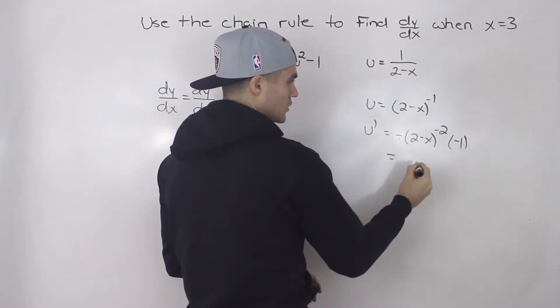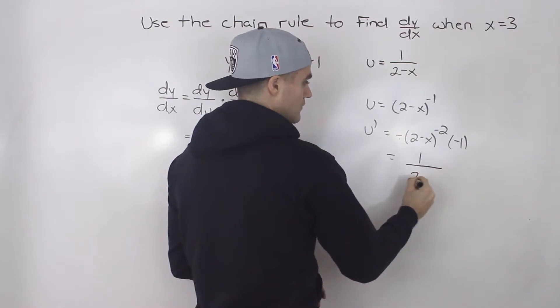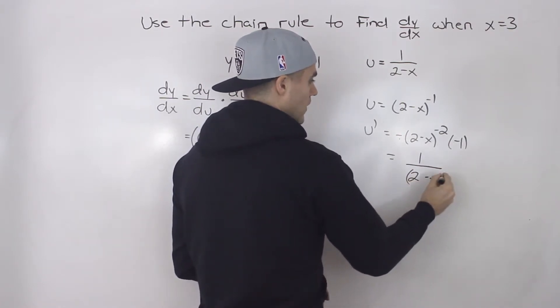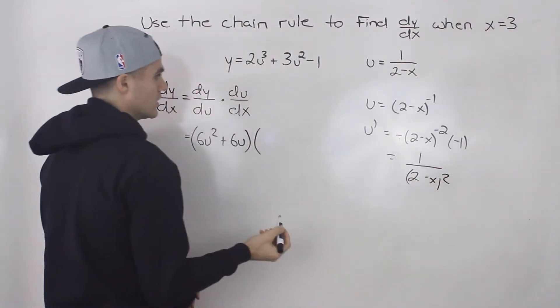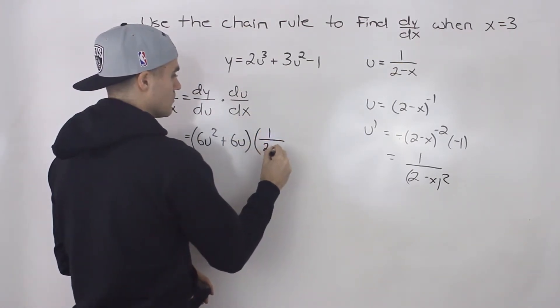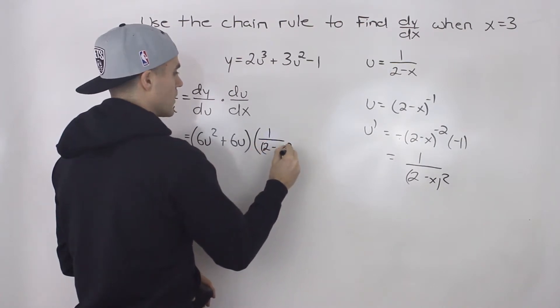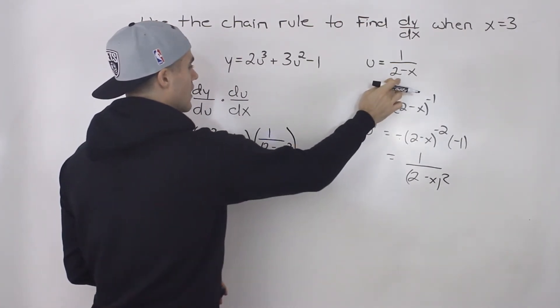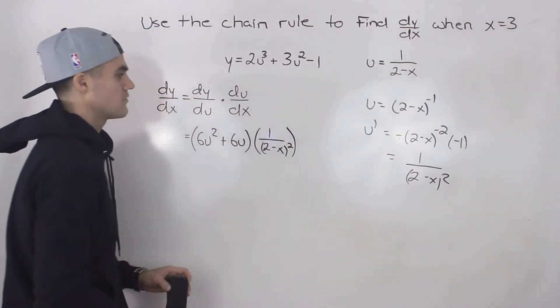So negative, negative turn into a positive. And then we'd have 2 minus x squared at the bottom there. So du/dx would be 1 over 2 minus x squared. It's just the derivative of that function there, of the u function.